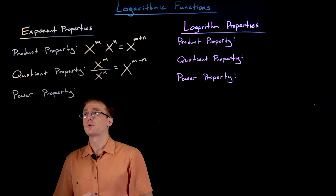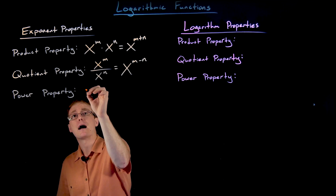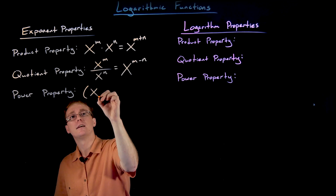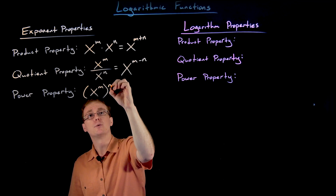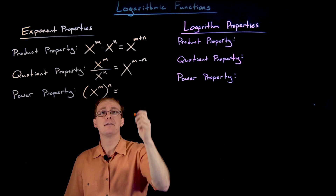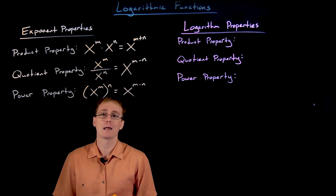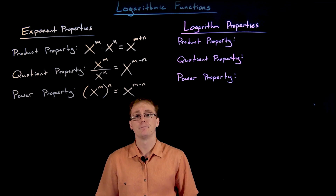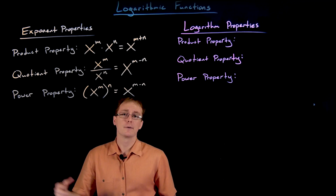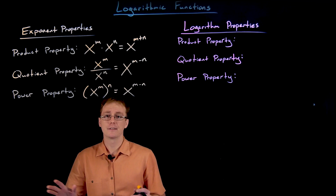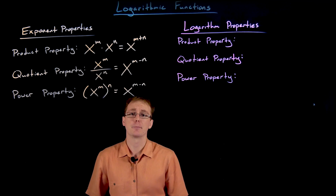The third exponent property we want to work with — which we can eventually convert to a logarithmic property — is the power property of exponents. It says that if we have x raised to some power m and we raise that to another power n, that's the same as raising x to the power of m times n. These three exponent properties are the ones that are going to have logarithmic counterparts.